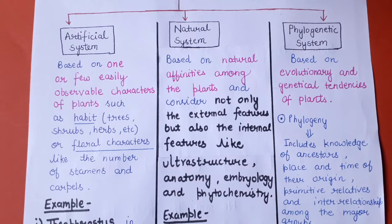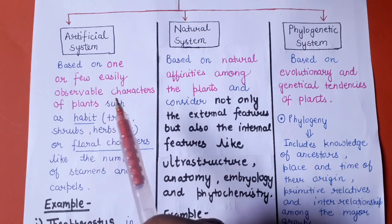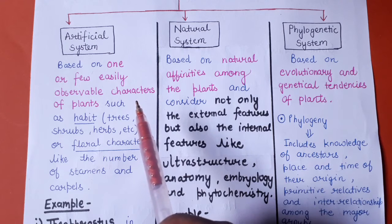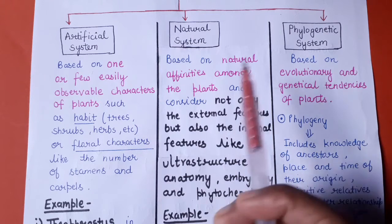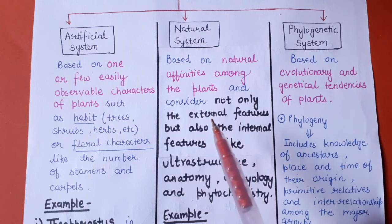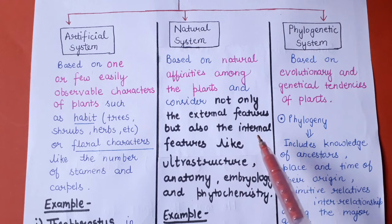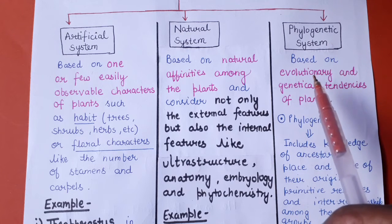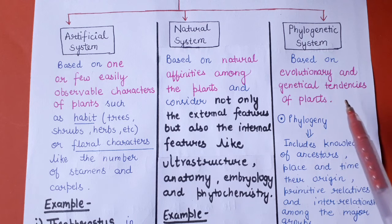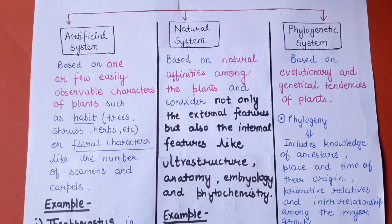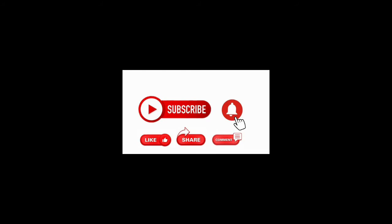To summarize: the three systems of classification are — artificial system, which involves one or few easily observable characteristics (examples: Theophrastus and Linnaeus); natural system, based on both external and internal features (example: Bentham and Hooker); and phylogenetic system, based on evolutionary and genetical tendencies (examples: Engler and Prantl, Hutchinson, Bessey, Cronquist, and Dahlgren). If you like the video, please subscribe to my channel for further updates. Thank you so much.